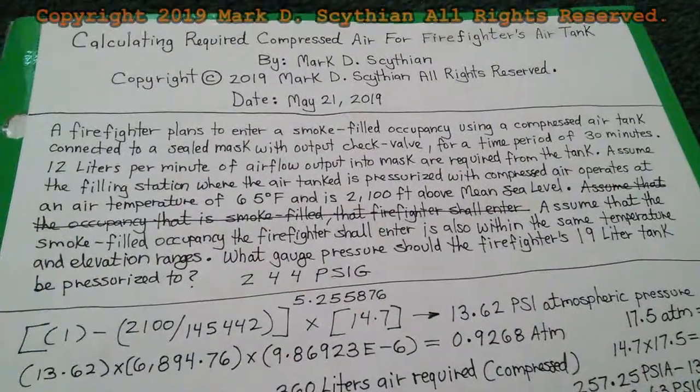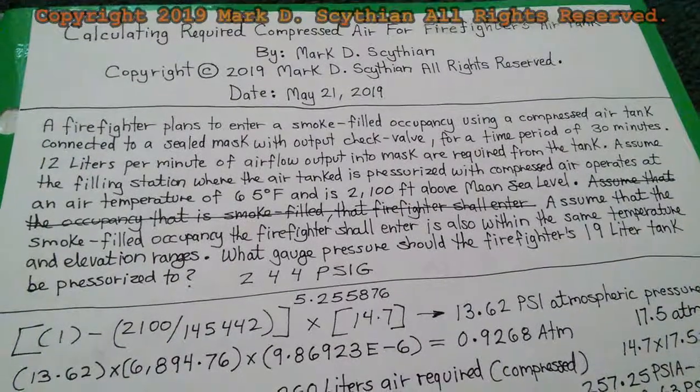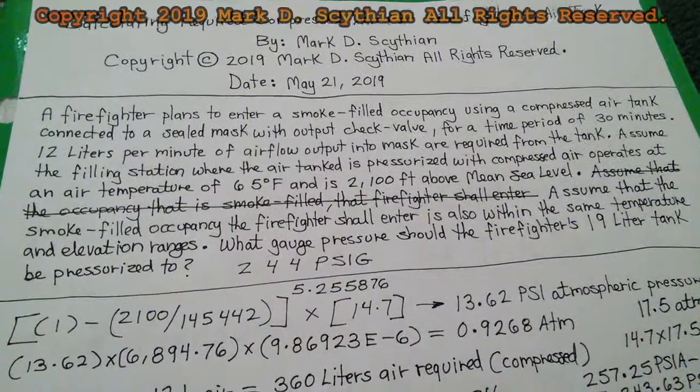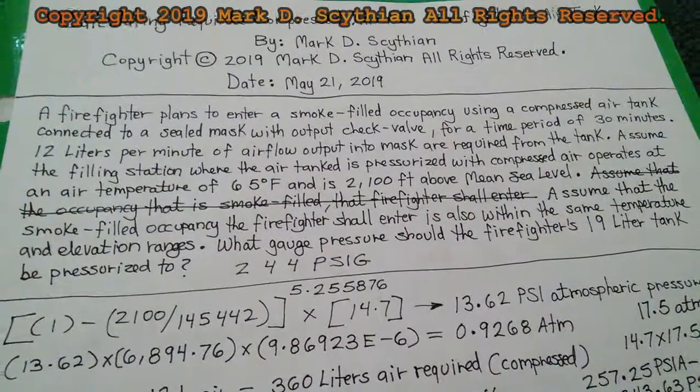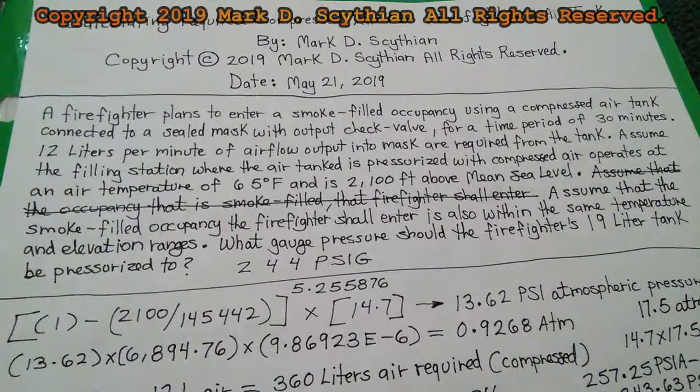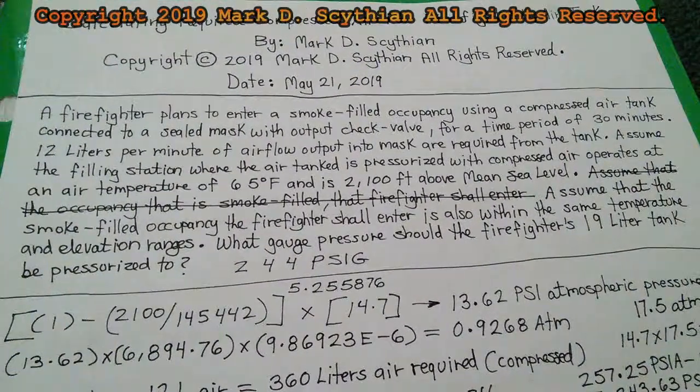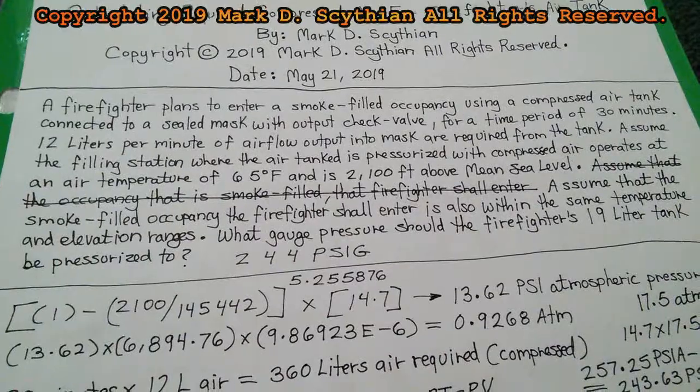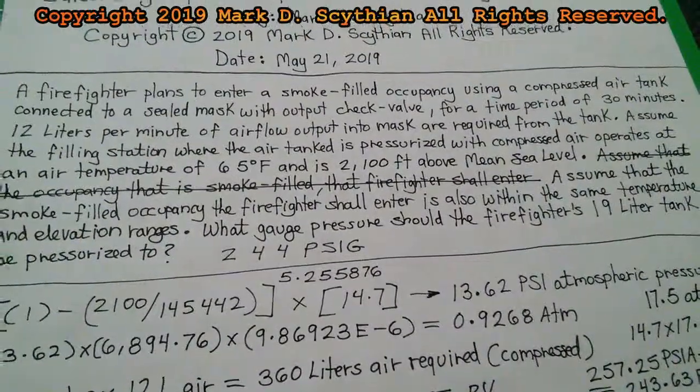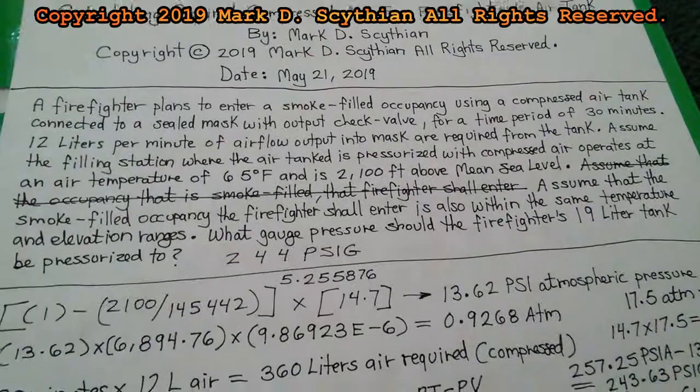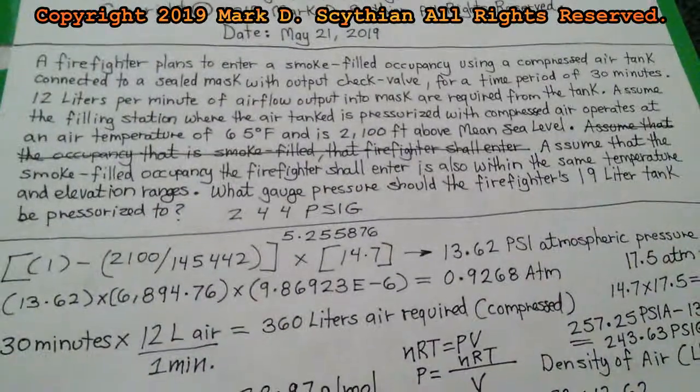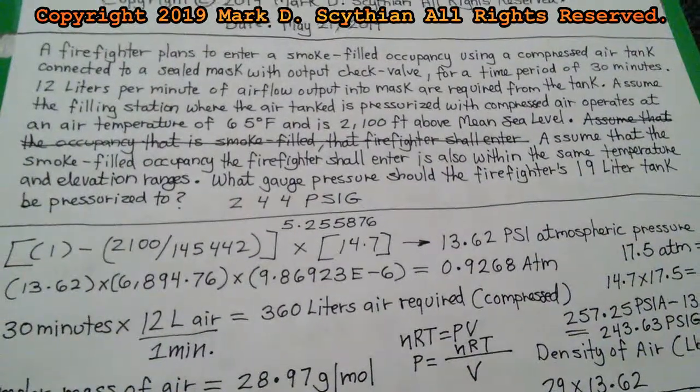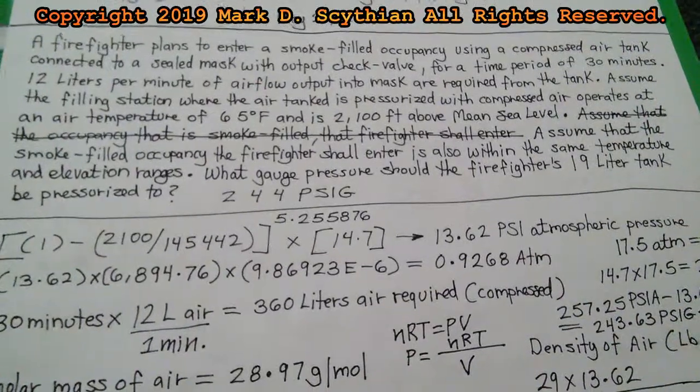Assume that this is an application we are working with. It is a firefighter plan to enter a smoke-filled occupancy using a compressed air tank connected to a sealed mask with output check valve for a time period of 30 minutes. 12 liters per minute of air flow output into masks are required from the tank. Assume the filling station where the air tank is pressurized with compressed air operates at an air temperature of 65 degrees Fahrenheit and is 2100 feet above mean sea level. Assume that the smoke-filled occupancy the firefighter shall enter is also within the same temperature and elevation ranges. What gauge pressure should the firefighter's 19 liter tank be pressurized to?